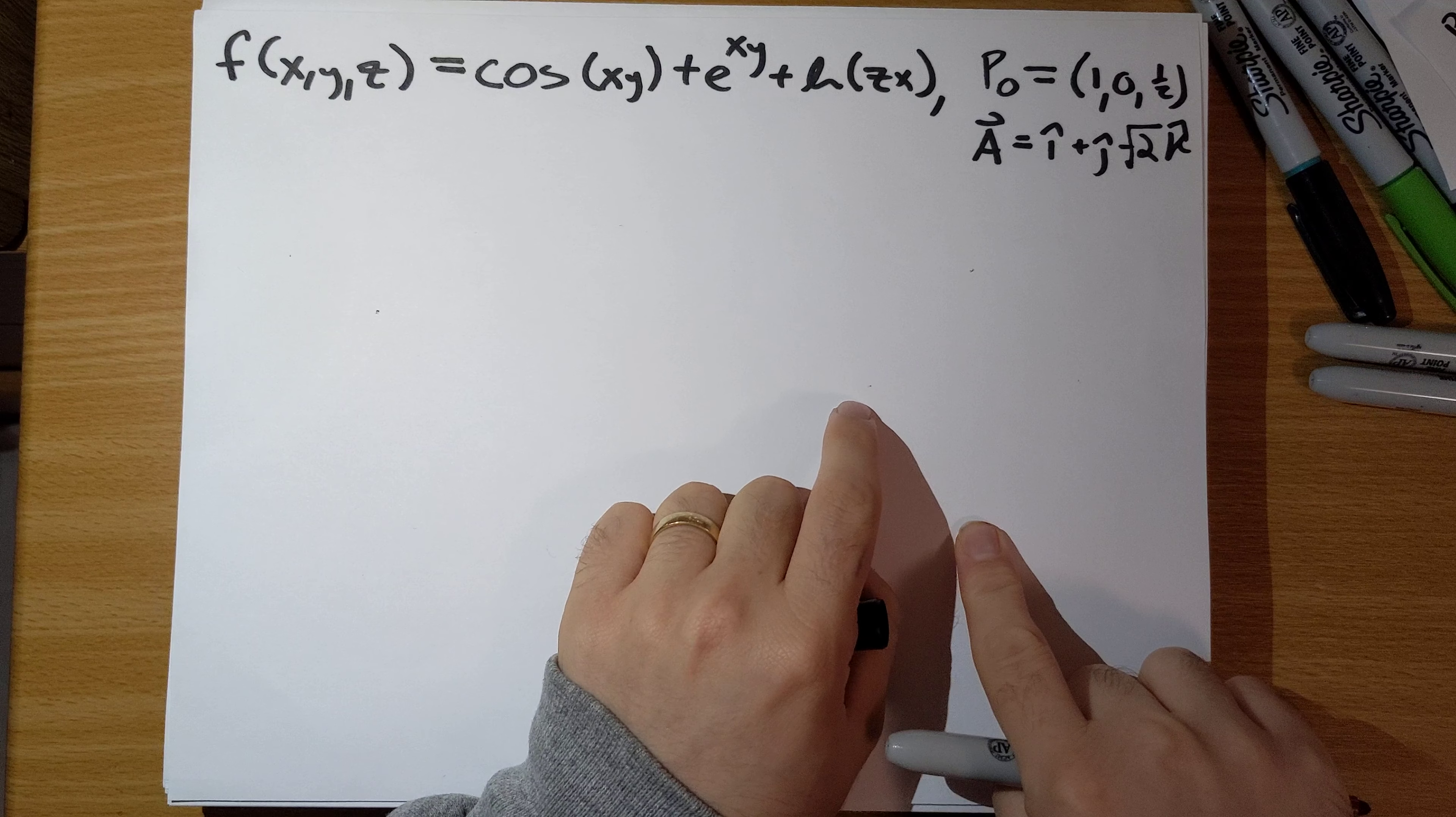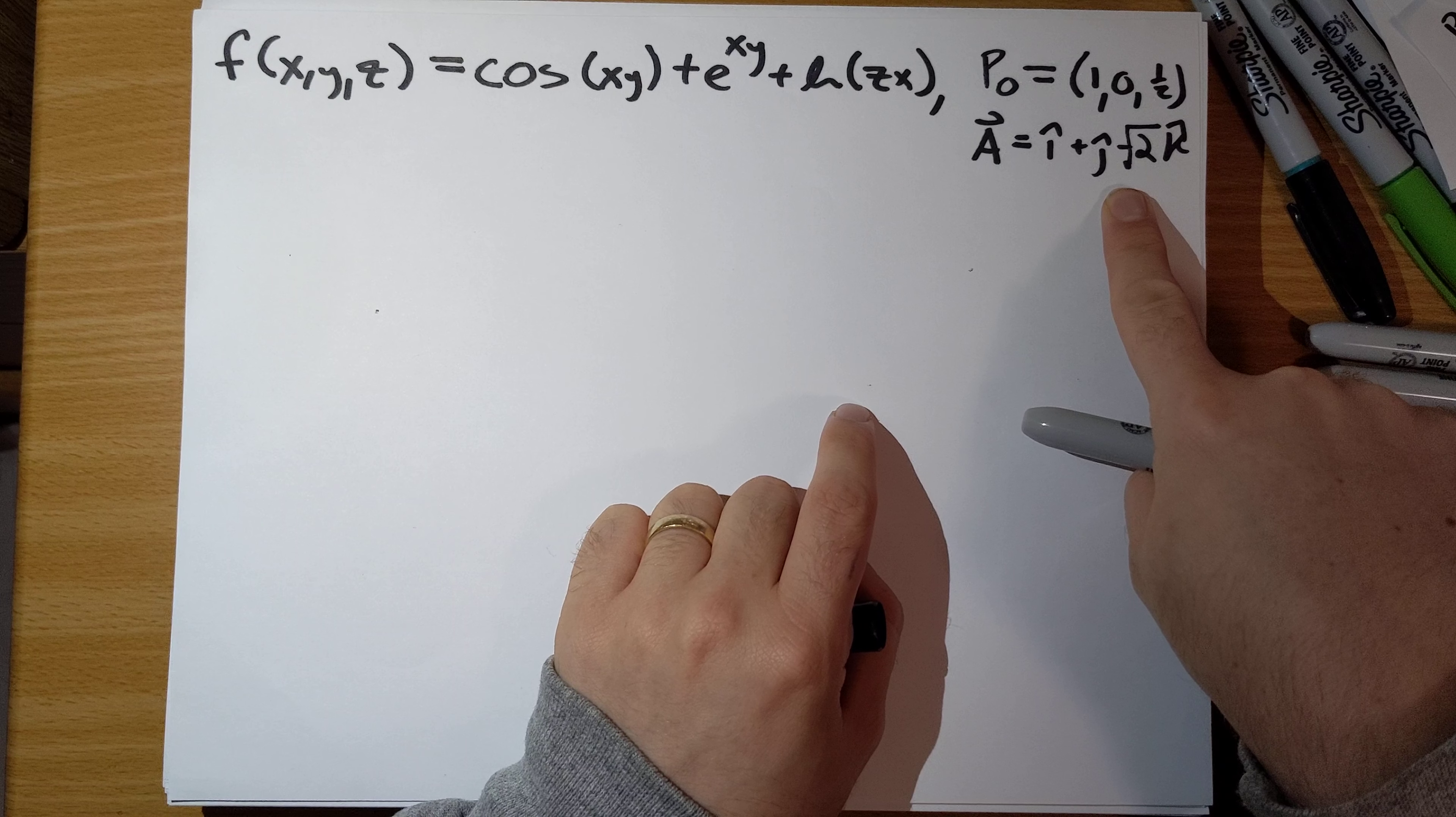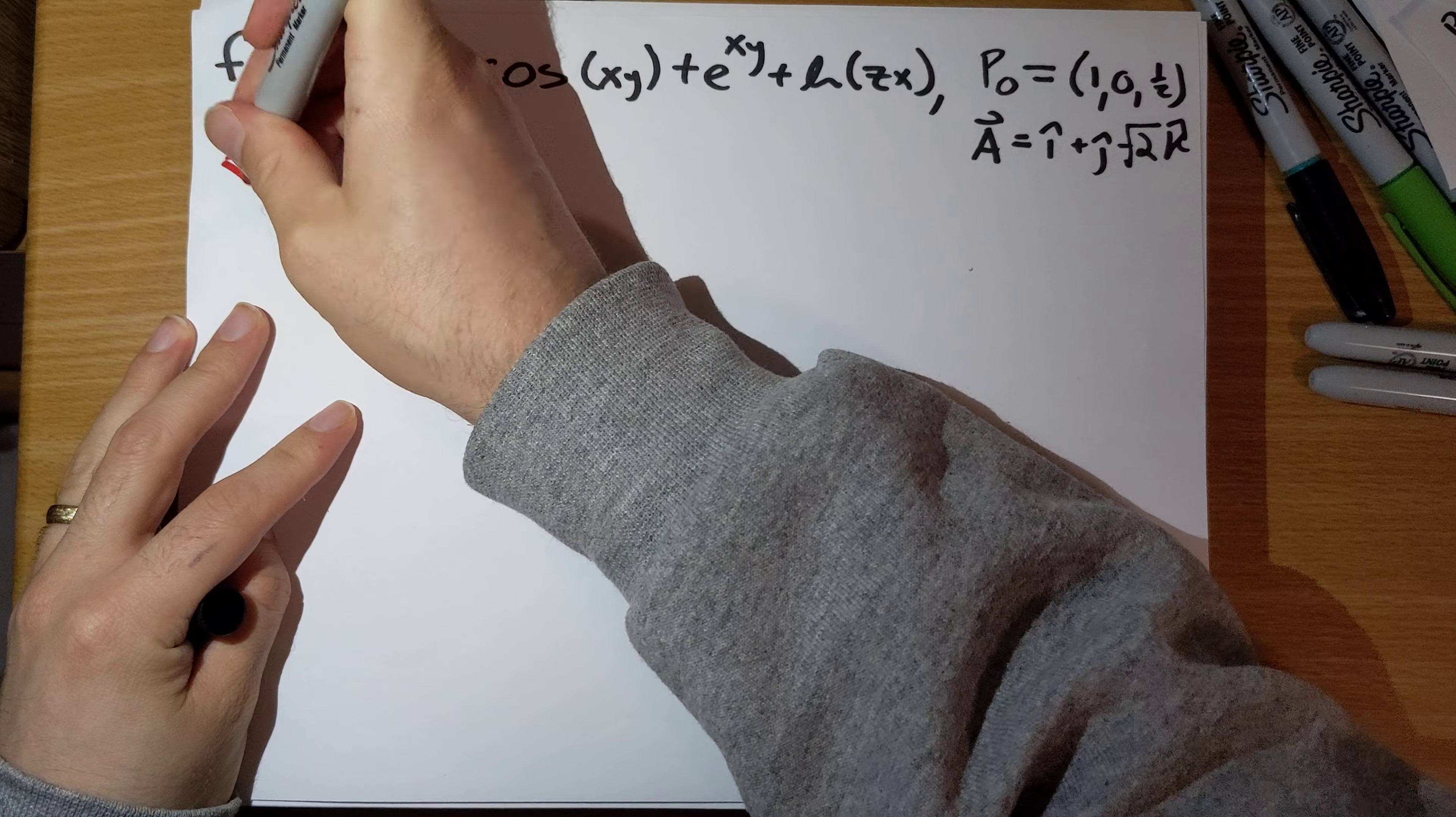Problem number 41, several part problem here. First thing is that we have to find the directional derivative of this function at this point in the direction of this vector here for part a.